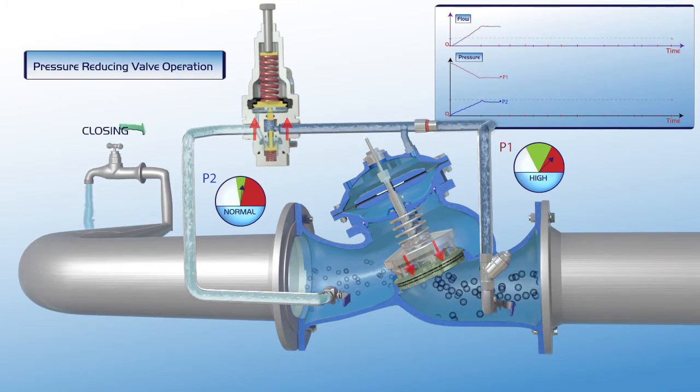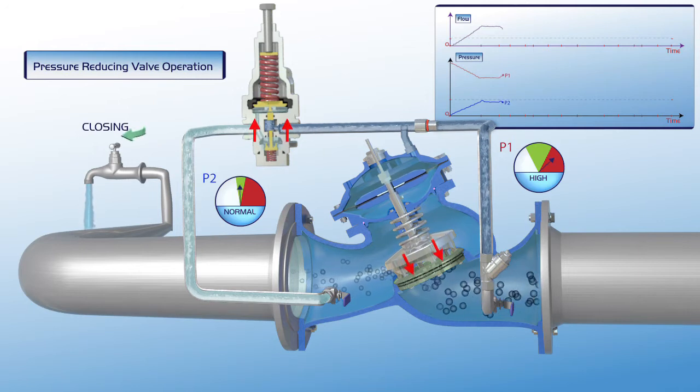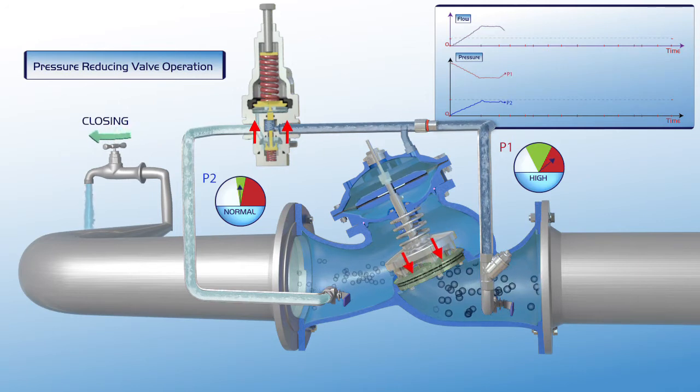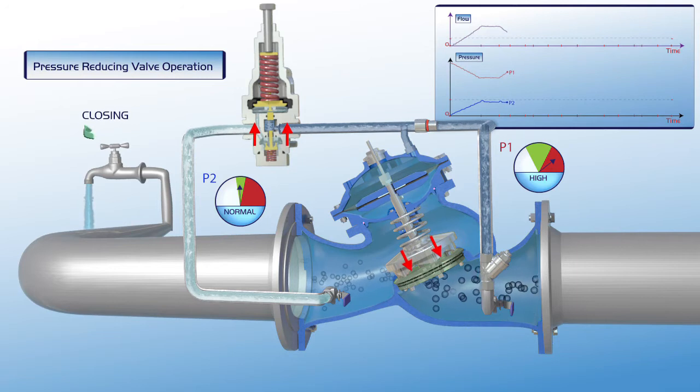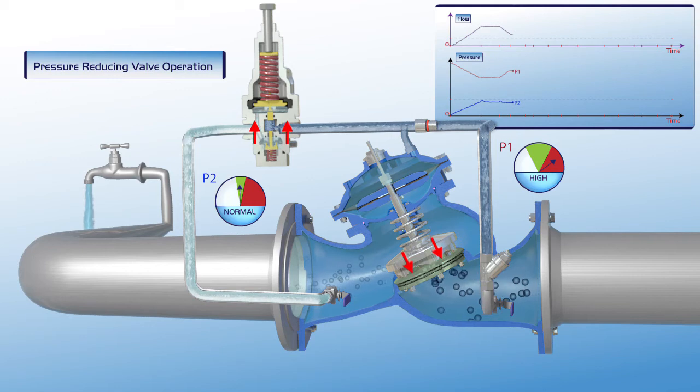When consumer water demand is reduced, the pilot responds immediately. The plunger moves slightly upwards, the pressure in the upper control chamber increases, and the valve closes slightly. The valve's operation stabilizes.